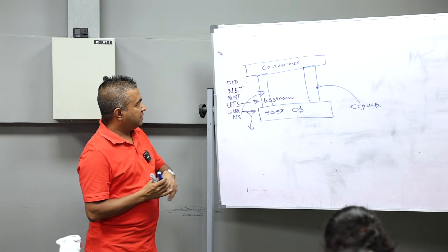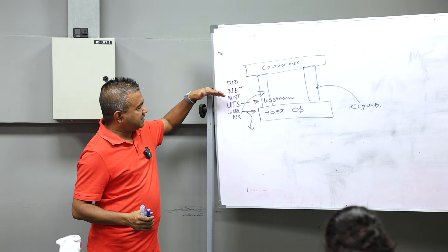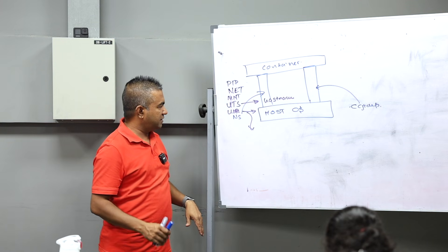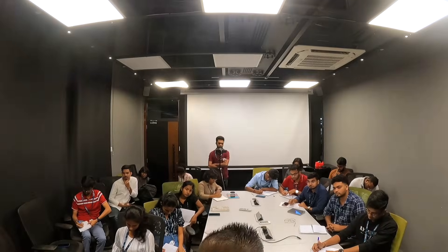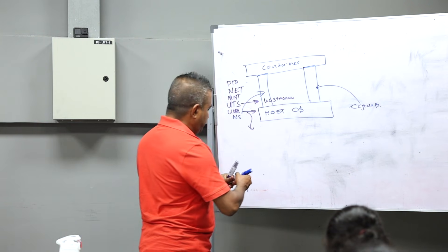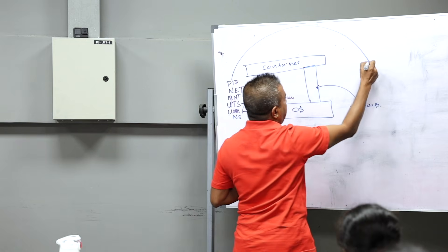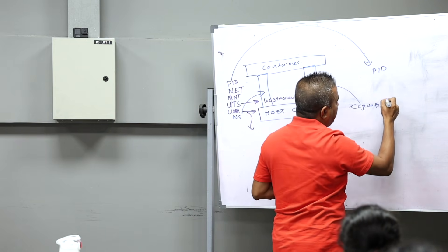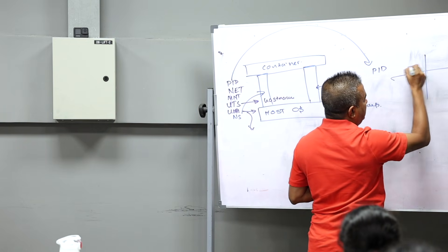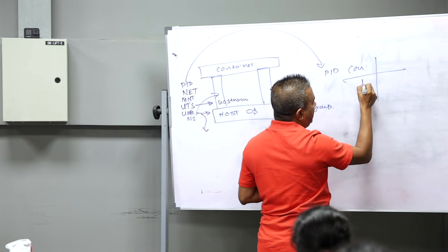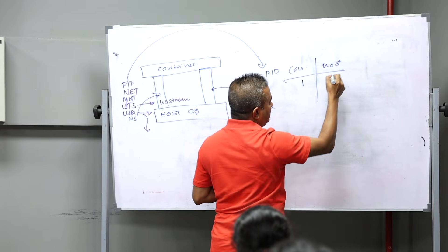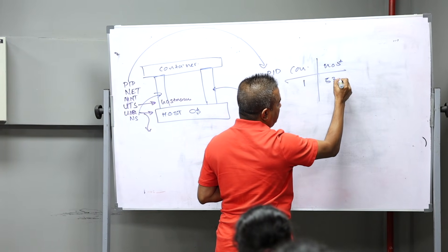So PID, NET, MNT, UTS, and user. There are two or three more namespaces now. Example for this PID: your container PID might be one, for the host PID might be 5334.